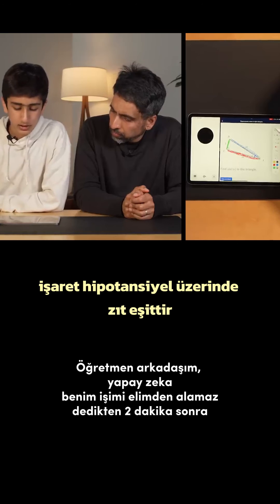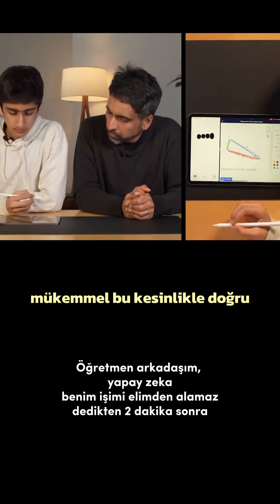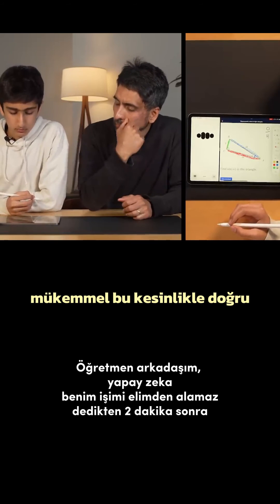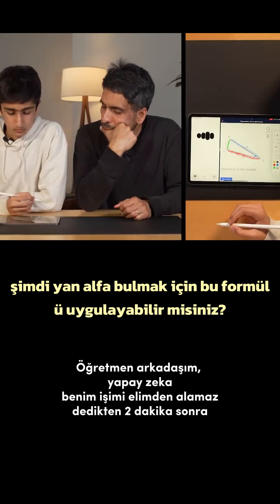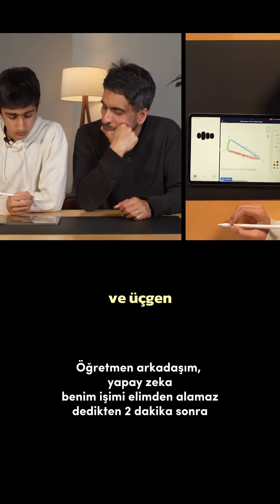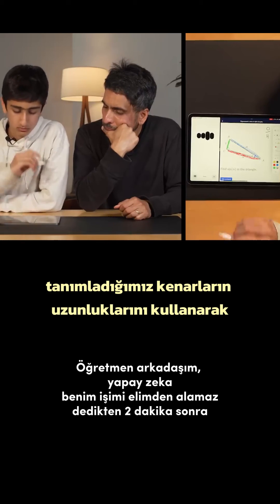Yeah, I know that the sine is equal to the opposite over the hypotenuse. Perfect. That's absolutely right. Now, can you apply that formula to find sine alpha in the triangle using the lengths of the sides that we've identified?